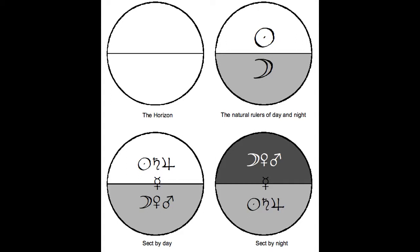The planets are divided up into two groups, teams or parties, by sect. The diurnal planets are Sun, Jupiter and Saturn. The nocturnal planets are Moon, Venus and Mars.